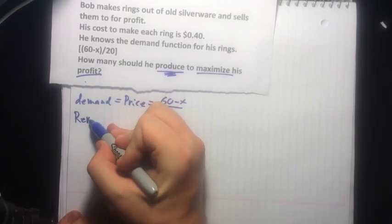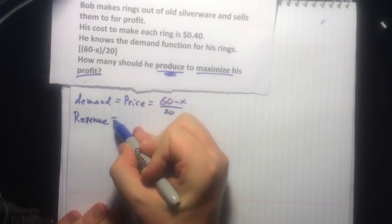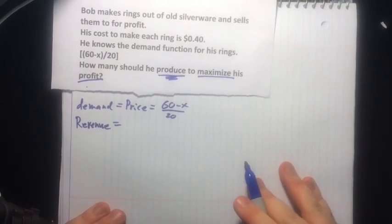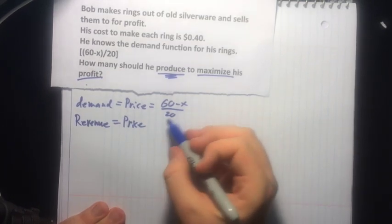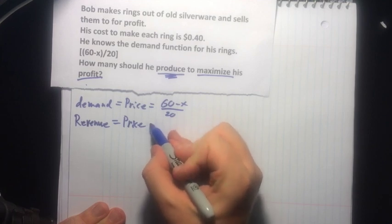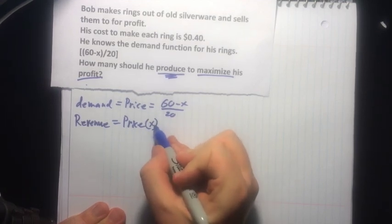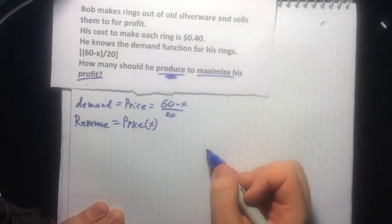Next thing we'll look for is revenue. How much money Bob gets to take home from the cash register. And that is just set by our price—what people pay at the register—times the number that he sells. So it's also a function of x.